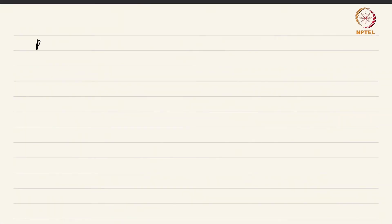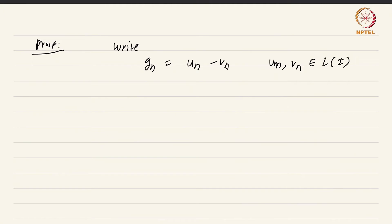Let us prove this result. Since all the technology has been done before, the proof is not very hard. What we need to do is express each of these g_n's as a difference of upper functions. We are going to use the approximation theorems for Lebesgue integrable functions. We write g_n as u_n minus v_n, where u_n and v_n are Lebesgue integrable upper functions with the additional property that the integral over I of v_n is less than (1/2)^n. This requirement ensures a particular series is actually convergent.